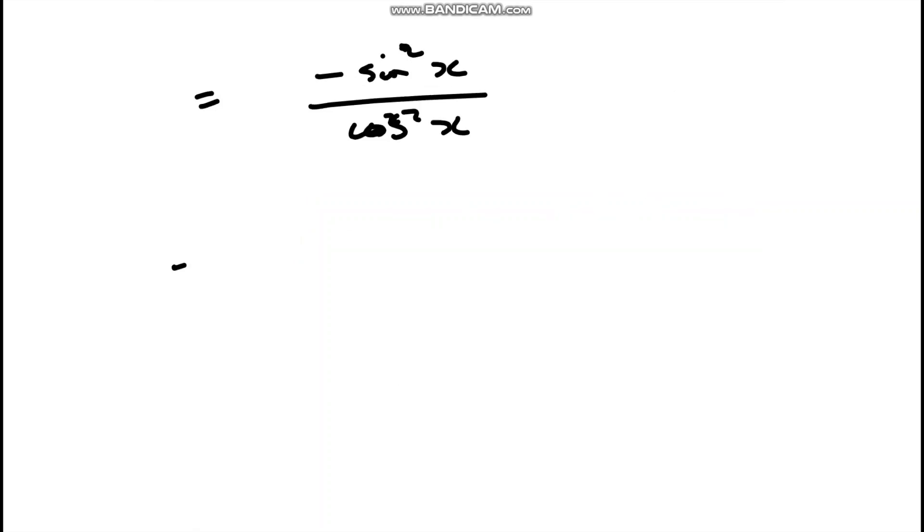So I'm going to bring the minus out front. So sine squared x over cos squared x. I'm going to bring out that squared bit.